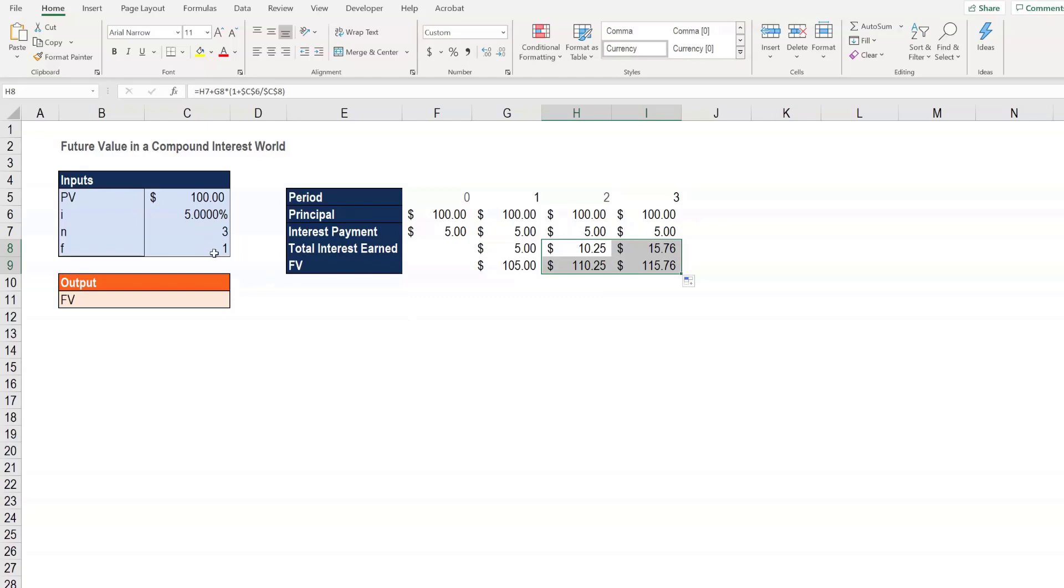Now if we include the frequency adjustment, as we do here, by changing F from 1 to 2, first of all we need to recreate more periods. In this case it will be 6 periods as we compound semi-annually. The principal and the interest amount don't change. And if we fill in for up to 6 years, we'll see that the number of 115.97 also matches what we have in the slide.